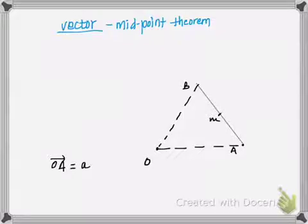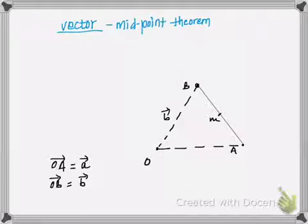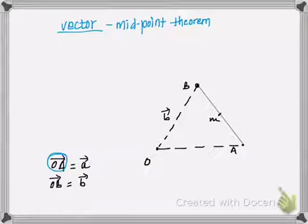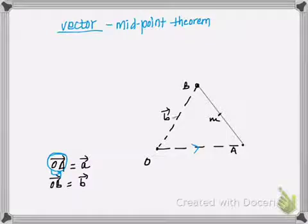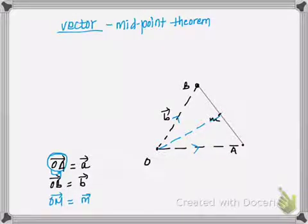I'm going to call OA as vector a. For OB, we can say it as vector b, so OB is the position vector for point B and I'll call it vector b. For vector OA, we draw an arrow from point O to point A, and similarly for OB draw an arrow from O to B. I'm also going to join O to M, and vector OM I'll suppose as vector m.